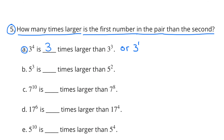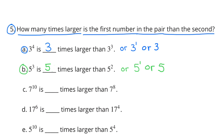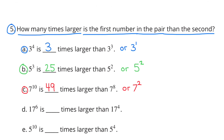Number 5. How many times larger is the first number in the pair than the second? A: 3 to the power of 4 is how many times larger than 3 to the power of 3? 3 to the power of 4 is 3, or 3 to the first power, times larger than 3 to the power of 3. B: 5 to the third power is how many times larger than 5 to the second power? 5 to the third power is 5, or 5 to the first power, times larger than 5 to the second power. C: 7 to the tenth power is how many times larger than 7 to the eighth power? 7 to the tenth power is 49, or 7 to the second power, times larger than 7 to the eighth power.